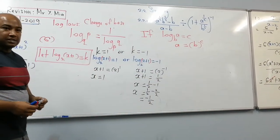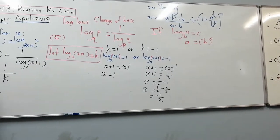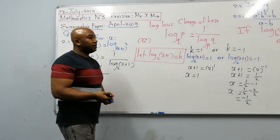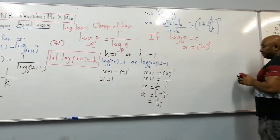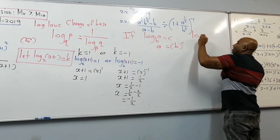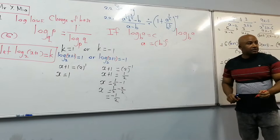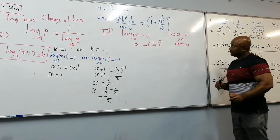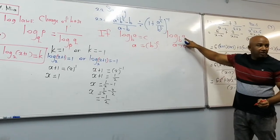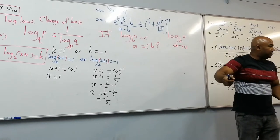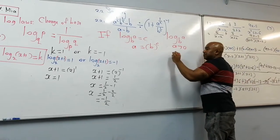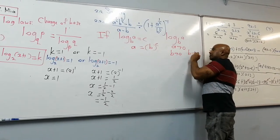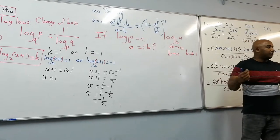We have two solutions and need to check them. Recall the restrictions for logs: a must be greater than zero — we can't take log of zero or a negative. Also the base b must be greater than zero and must not equal 1. For log of x plus 1 to the base 2, x plus 1 must be greater than zero, so x must be greater than minus 1.